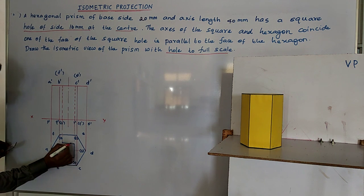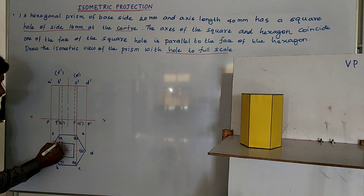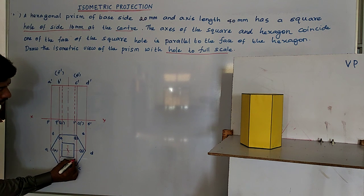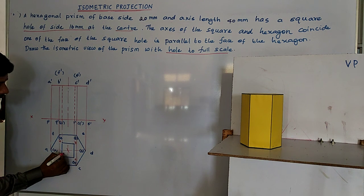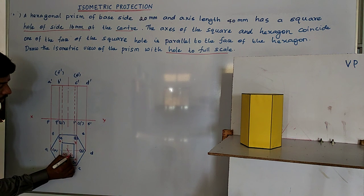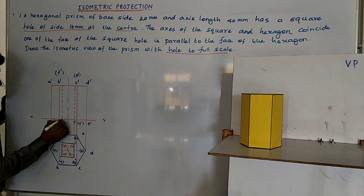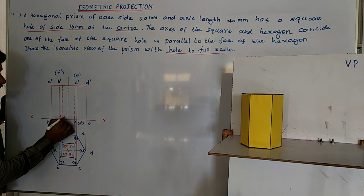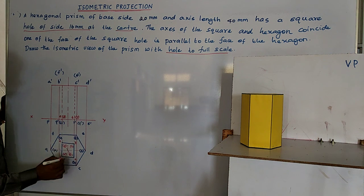Let us name these points. We have bottom corner points and top corner points. I name the top corner points as 1, 2, 3, and 4, and the bottom corner points as 5, 6, 7, and 8. So here, 5 and 8 are equal, and 7 and 6 are equal. These two points are 1 and 4, and these are 2 and 3.